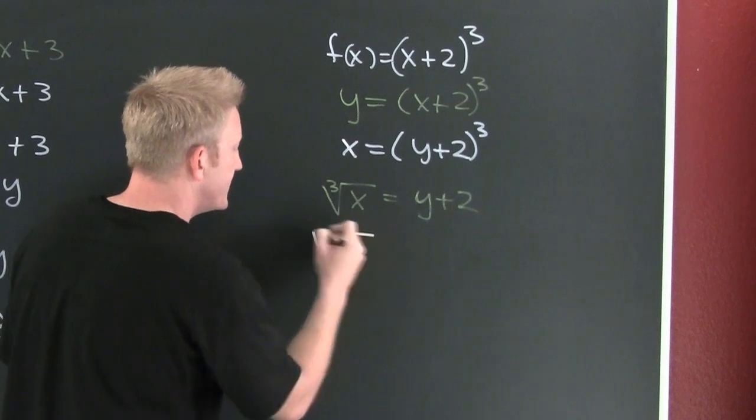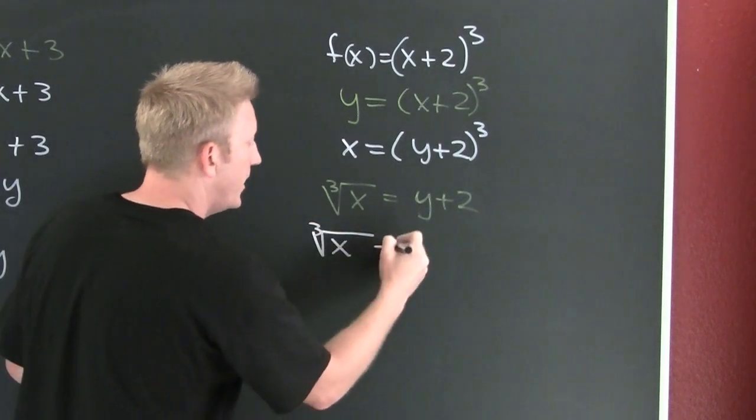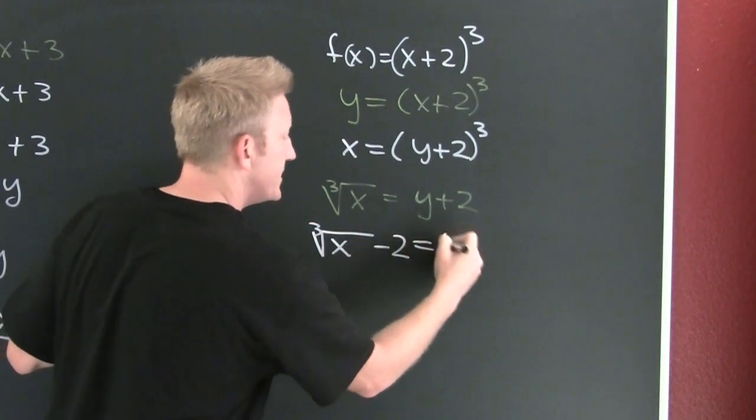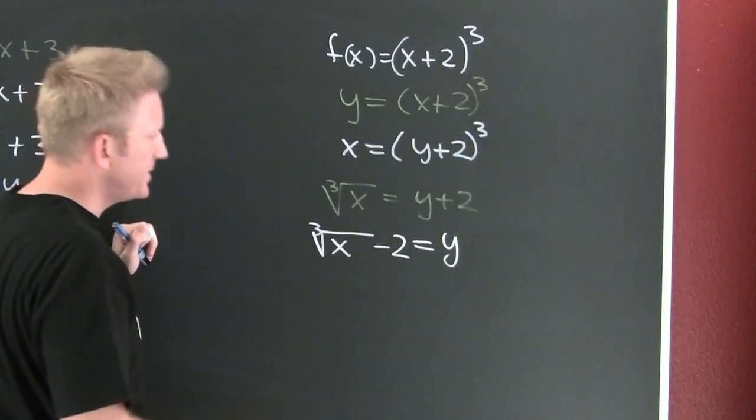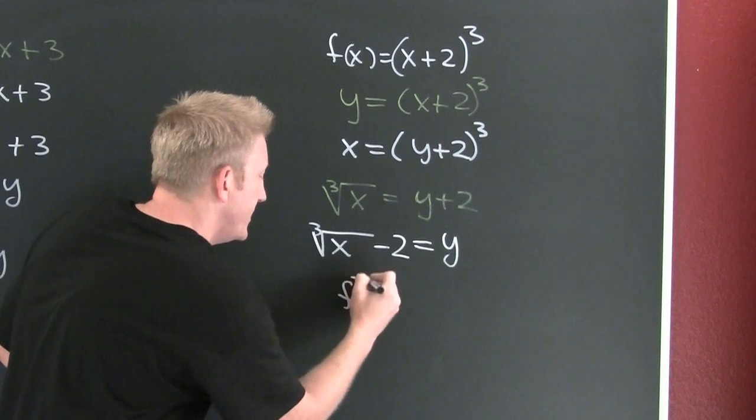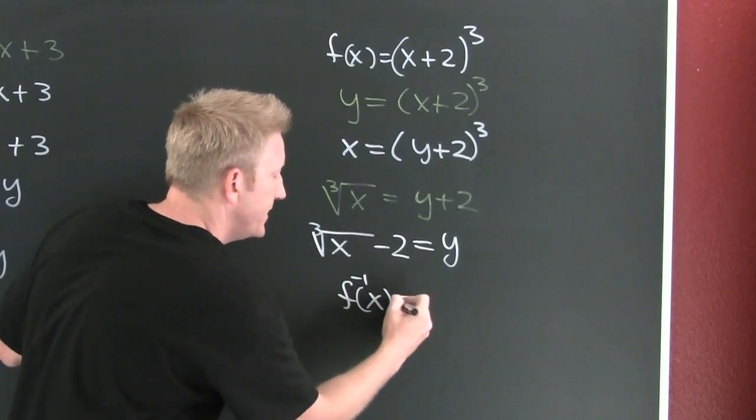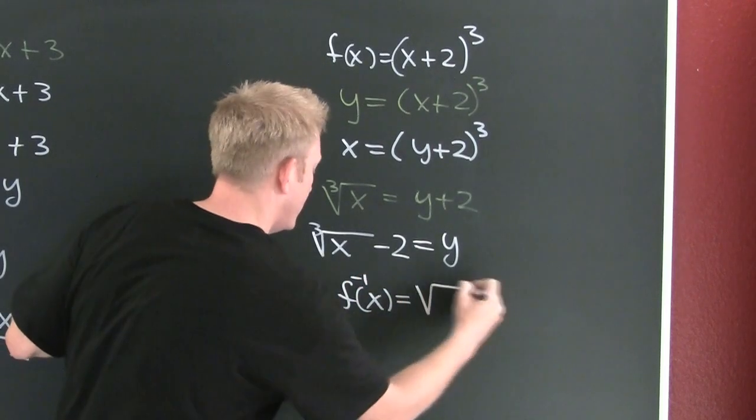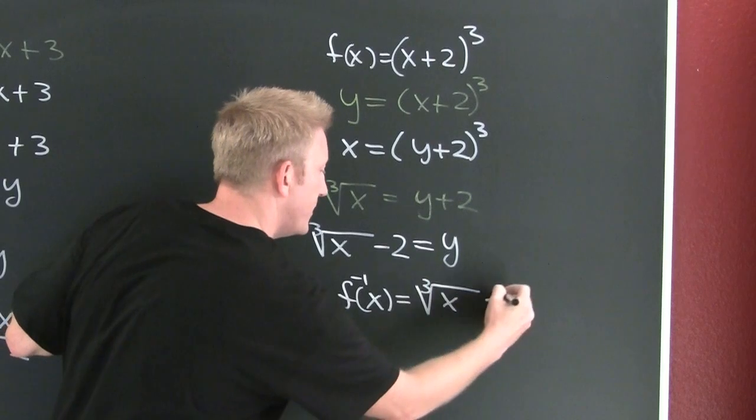Subtract off that 2. The third root of x minus 2 is equal to y. So then last step, f inverse of x is equal to the third root of x minus 2.